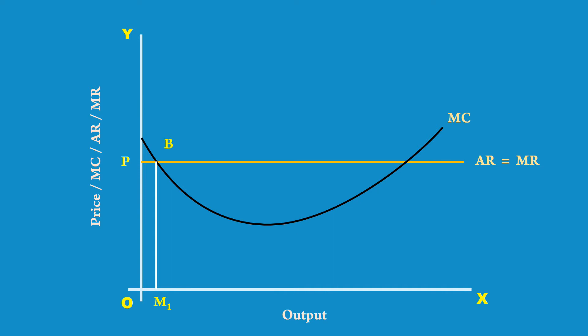At point B, marginal cost is equal to marginal revenue. Though one of the equilibrium conditions is satisfied, producer cannot be in equilibrium at point B because the second condition is not satisfied. Marginal cost is falling at this point.